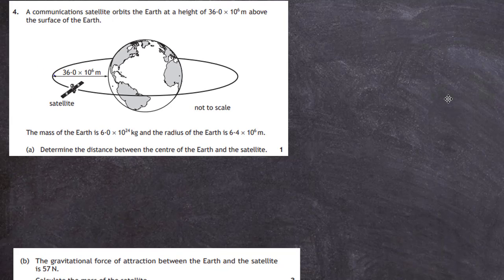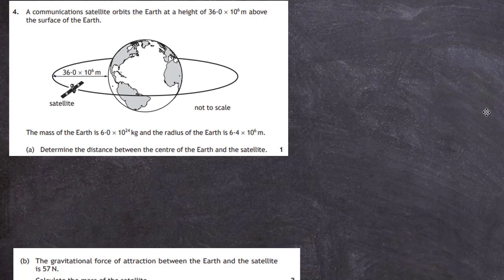Question 4 from the 2019 Higher Physics Exam, section 2 from the SQA. A communications satellite orbits the Earth at a height of 36.0×10⁶ m above the surface of the Earth. The mass of the Earth is given as 6.0×10²⁴ kg and the radius of the Earth is given as 6.4×10⁶ m.